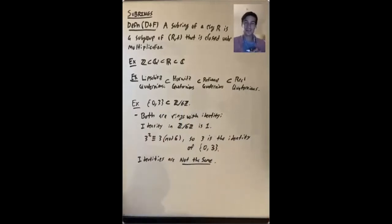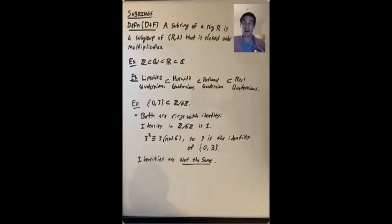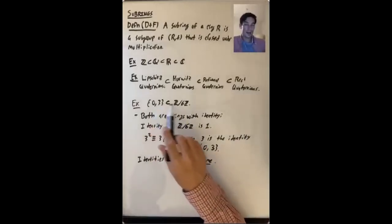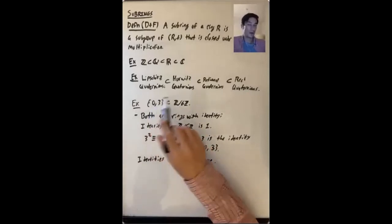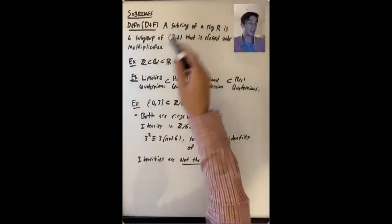Conrad has a set of notes where he discusses some of the issues around the basic definitions of rings, including whether or not you want to require a ring to have an identity. If you define things a different way, you could ask what a subring should be — do you want to require a subring to have an identity, and if so, do you want to require that the identities be the same, to avoid situations like this? Just as there's some ambiguity across references about the proper definition of a ring, this carries over to the definition of subrings.